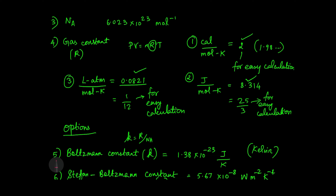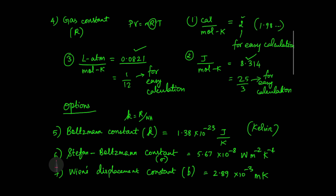Avogadro number, or Avogadro constant — the value is 6.023 × 10 power 23 mole inverse.